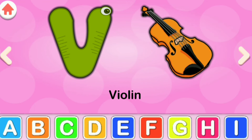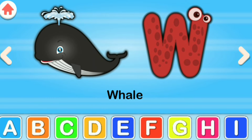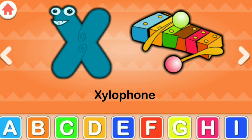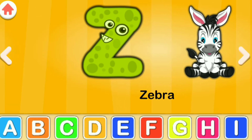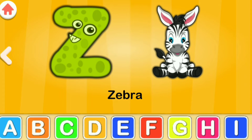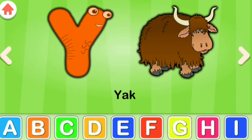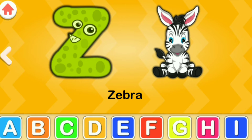V for Violin, W for Whale, X for Xylophone, Y for Yacht, Z for Zebra.